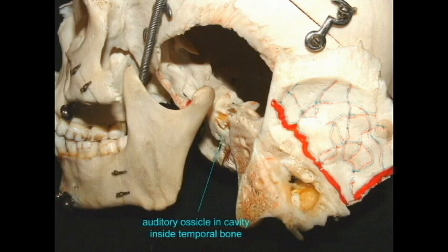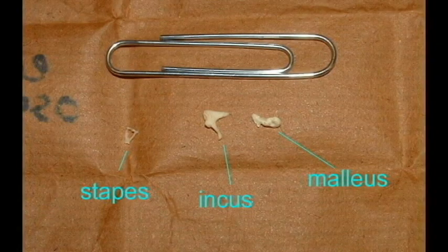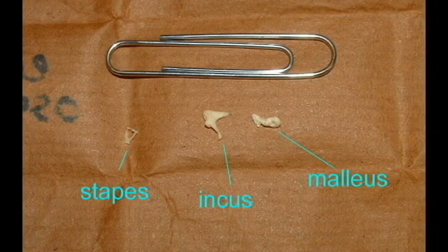And so small Cynodont reptiles had become small mammals during the Triassic period.